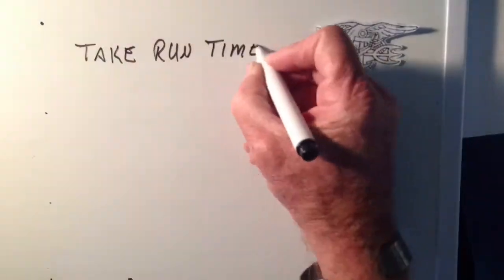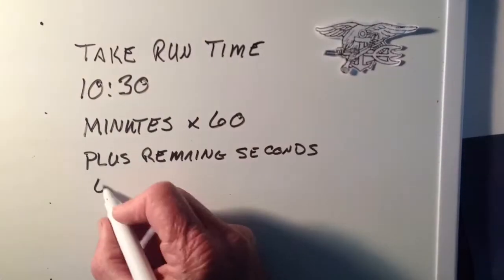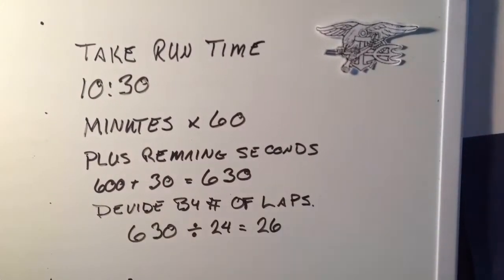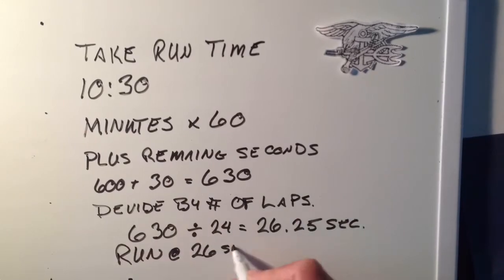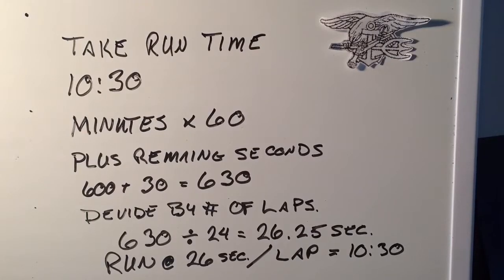The steps and procedures are as follows — you might want to grab a pen and paper, or pause the video to get something to write on. The first thing you're going to do is take the PST minimum time for SEAL, which is 10 minutes and 30 seconds. Take the 10 minutes, multiply by 60, then add the remaining 30 seconds. Now you have 630 seconds.